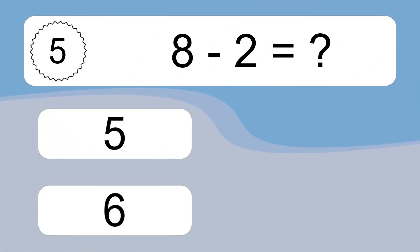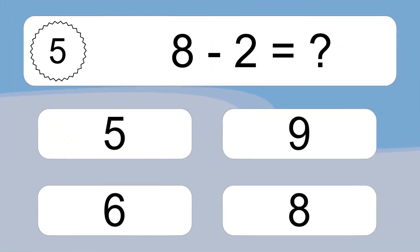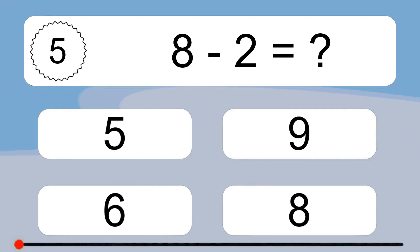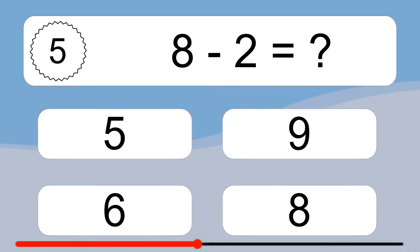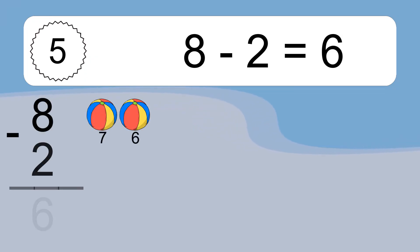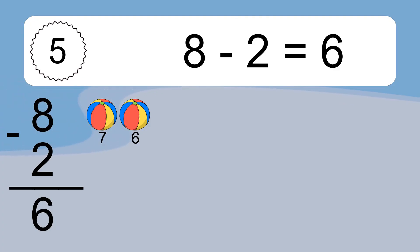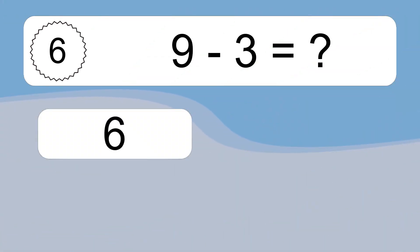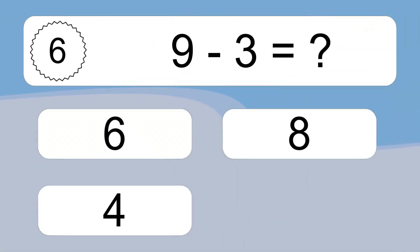8 minus 2 equals what? 8 minus 2 equals 6. Let's count it: 7, 6.